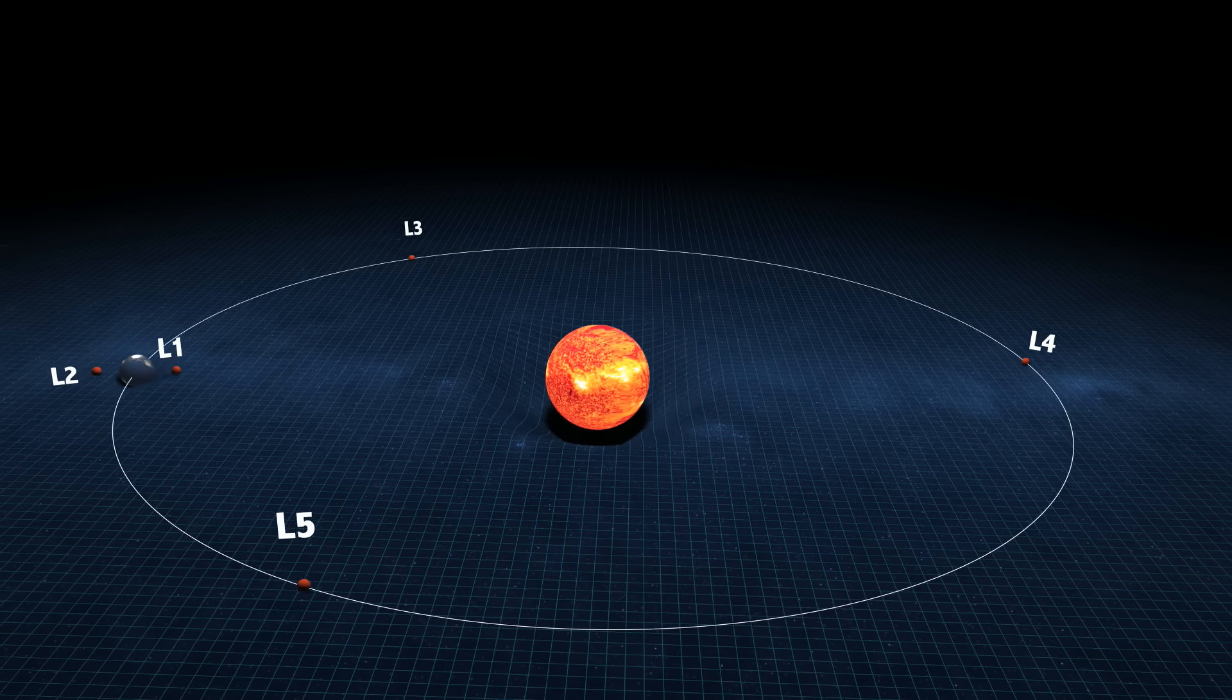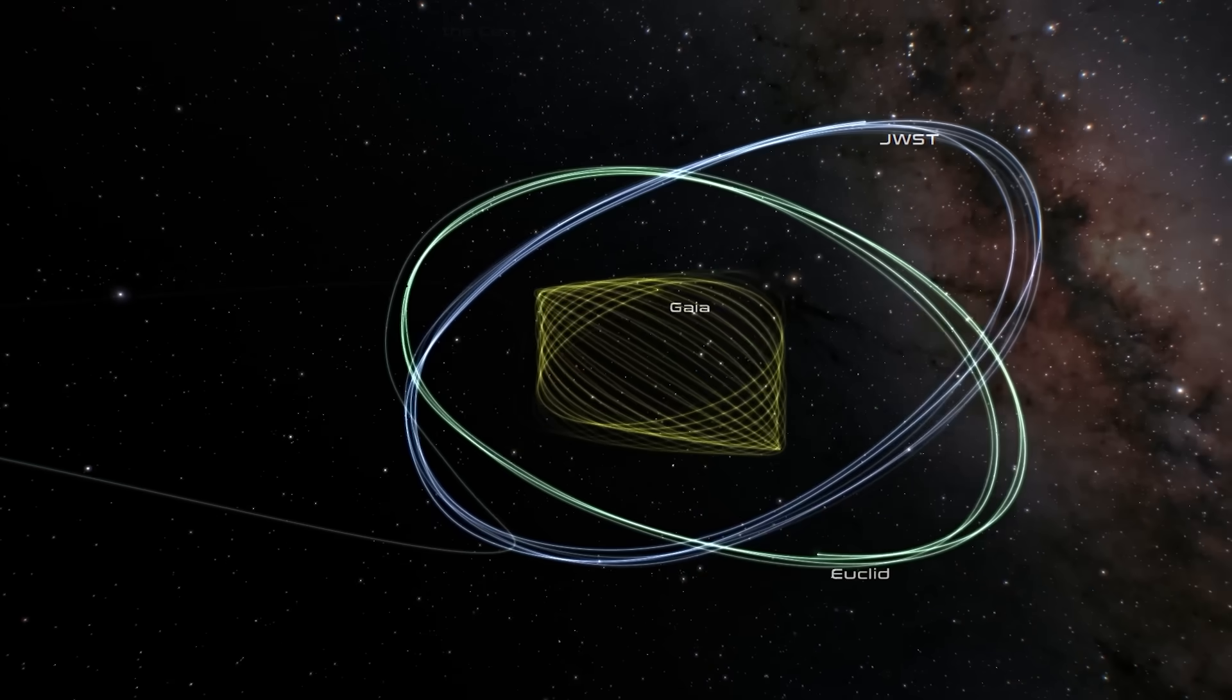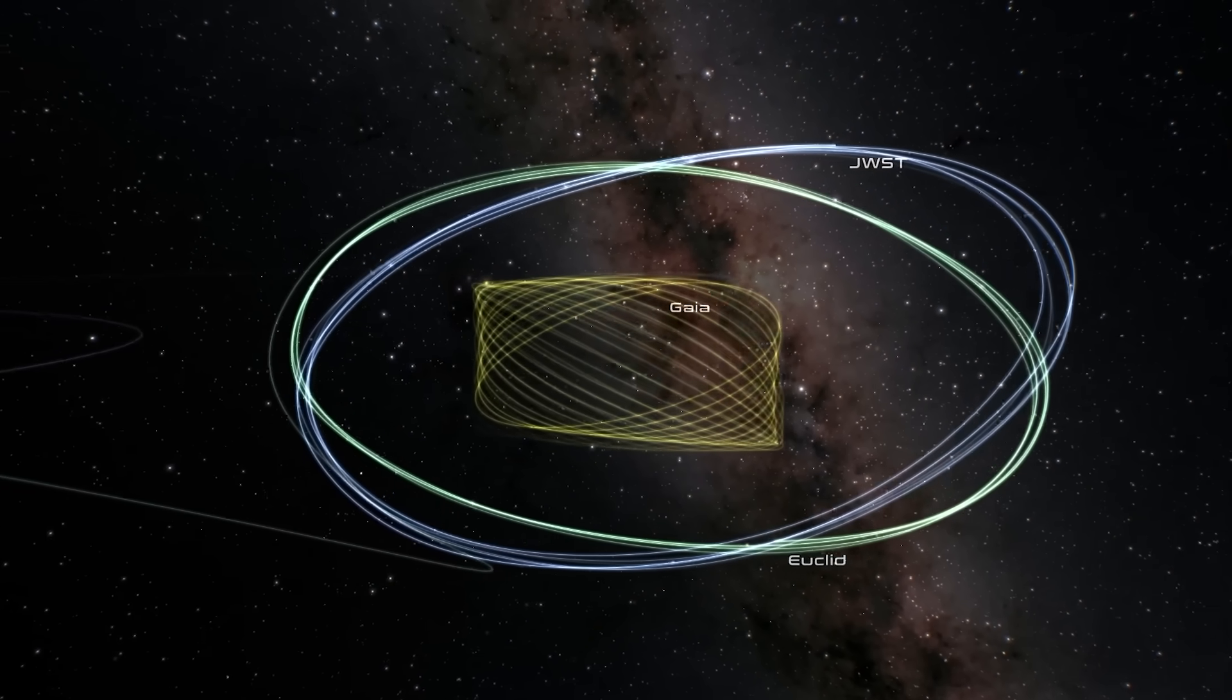This location offers a stable, unobstructed view of deep space, and it is also home to other major observatories, like Gaia and the James Webb Space Telescope.